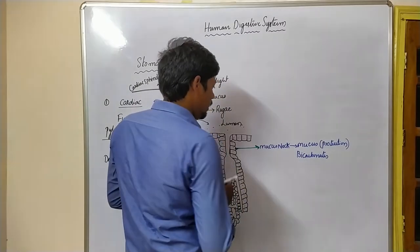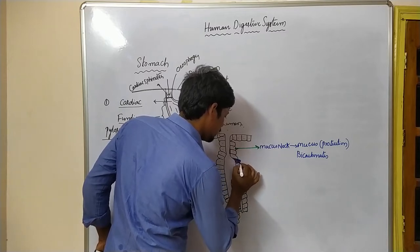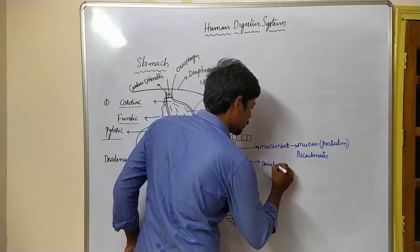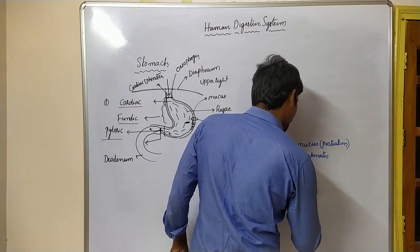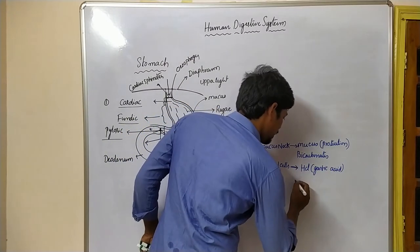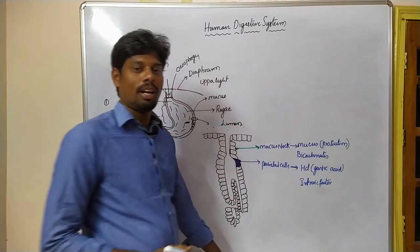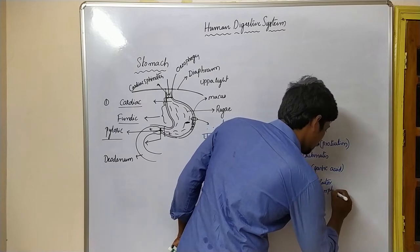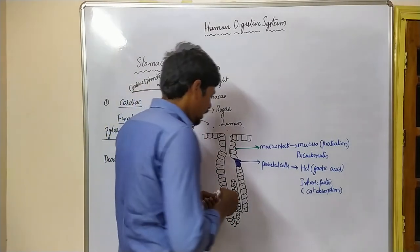Next to the mucous neck cells, there are some cells called parietal cells. Parietal cells produce HCl, or gastric acid. At the same time, these parietal cells also produce the intrinsic factor, which is essential for calcium absorption.